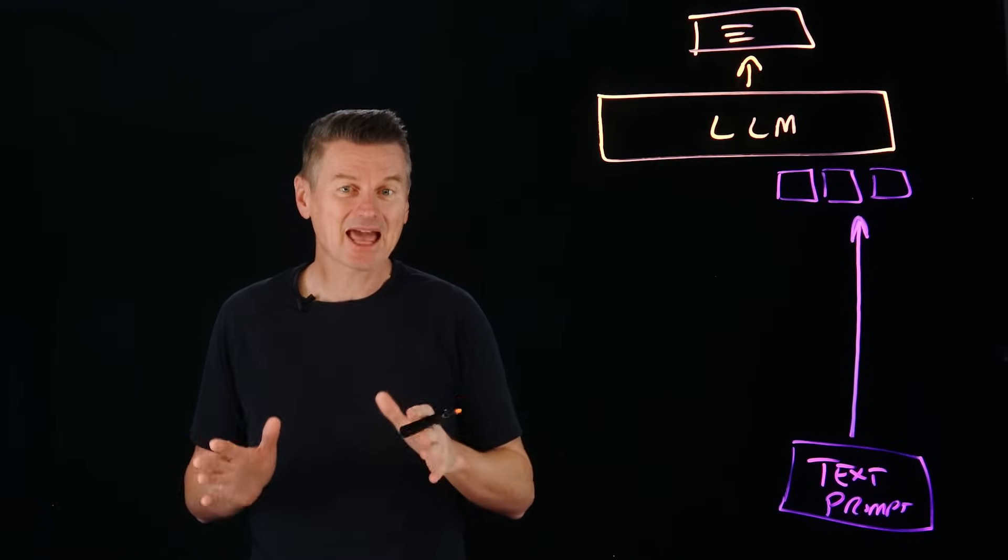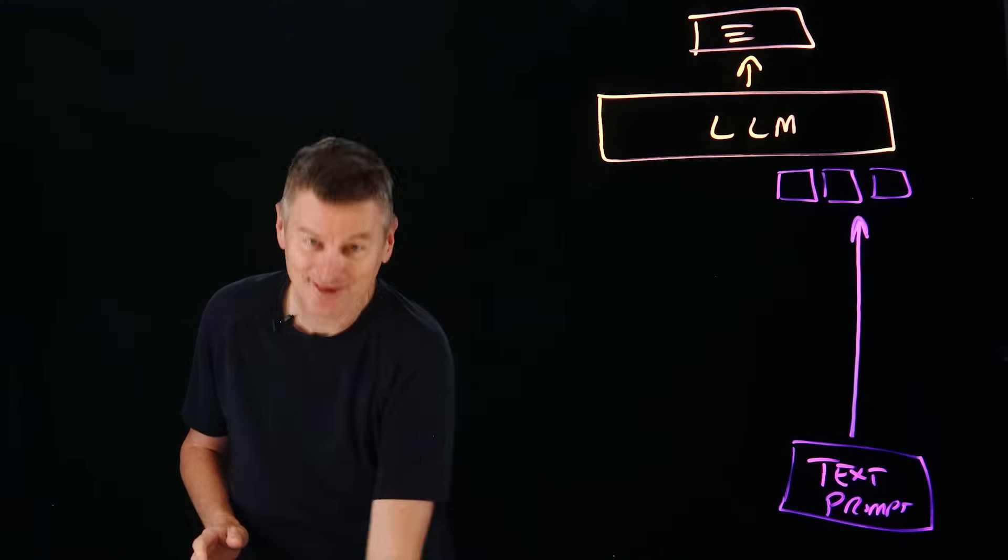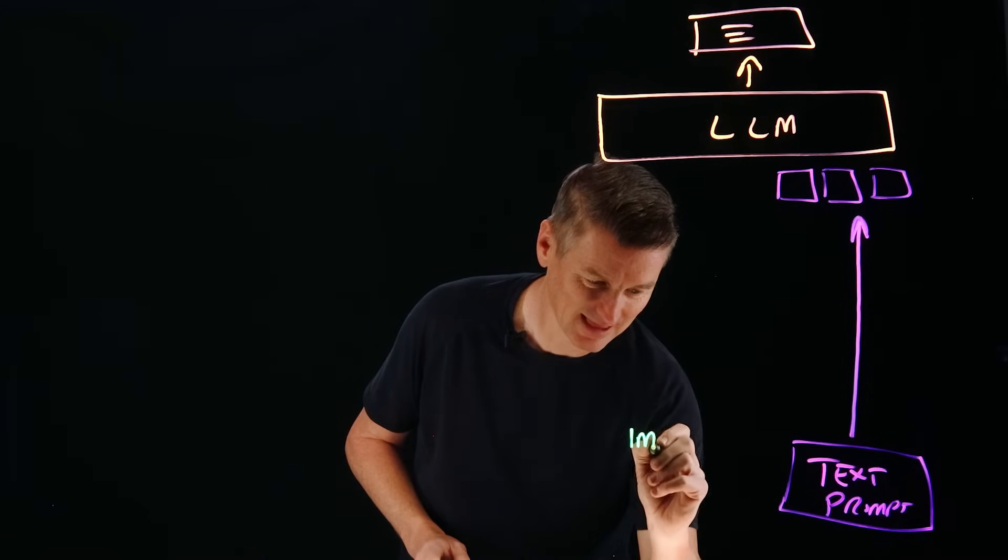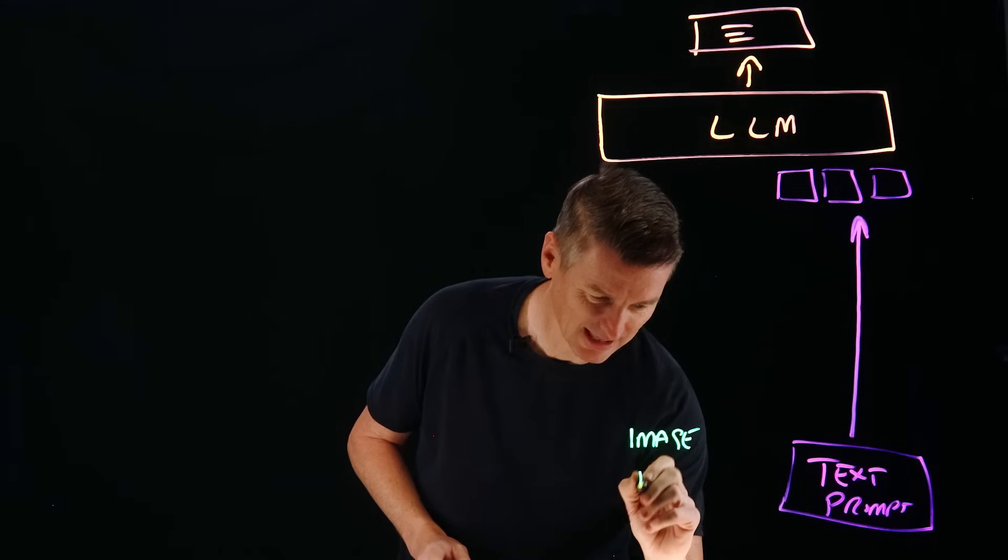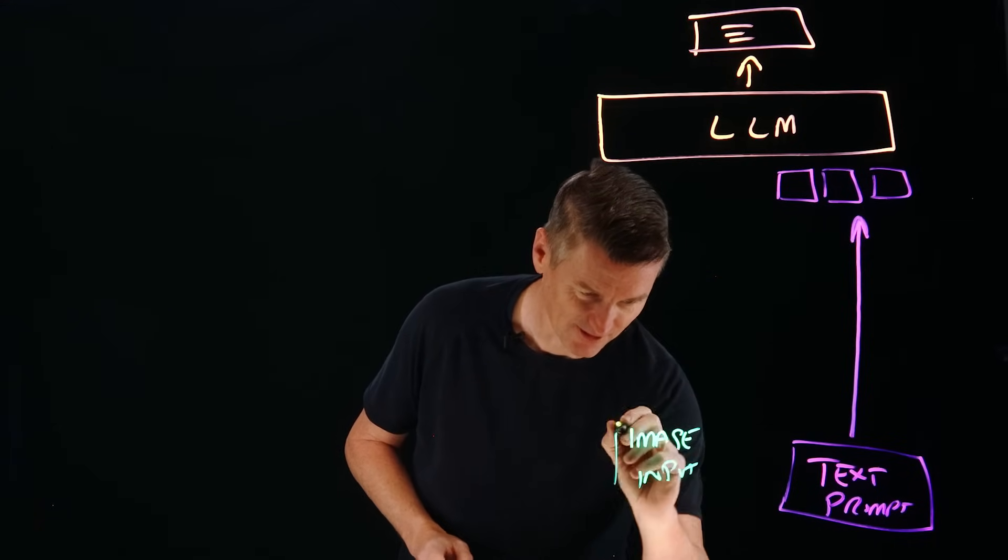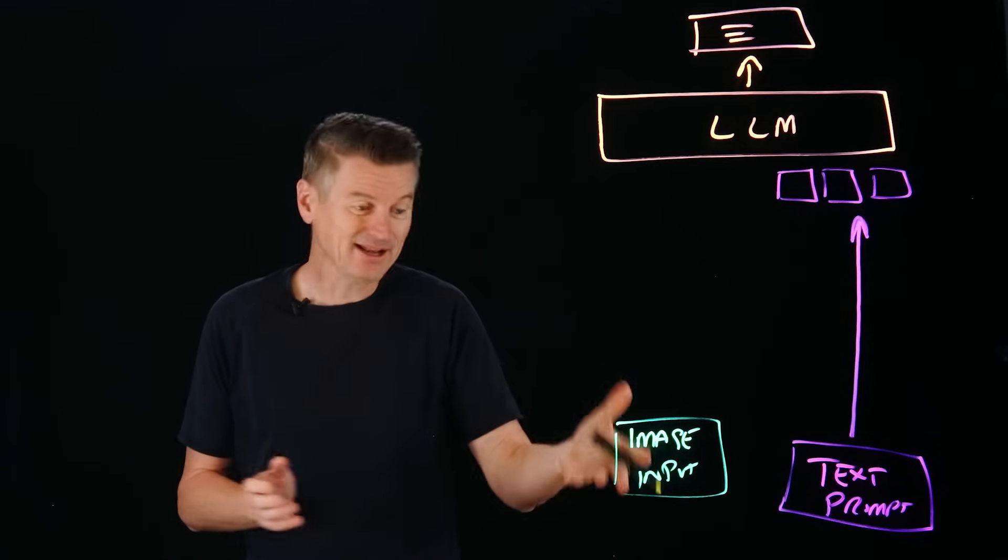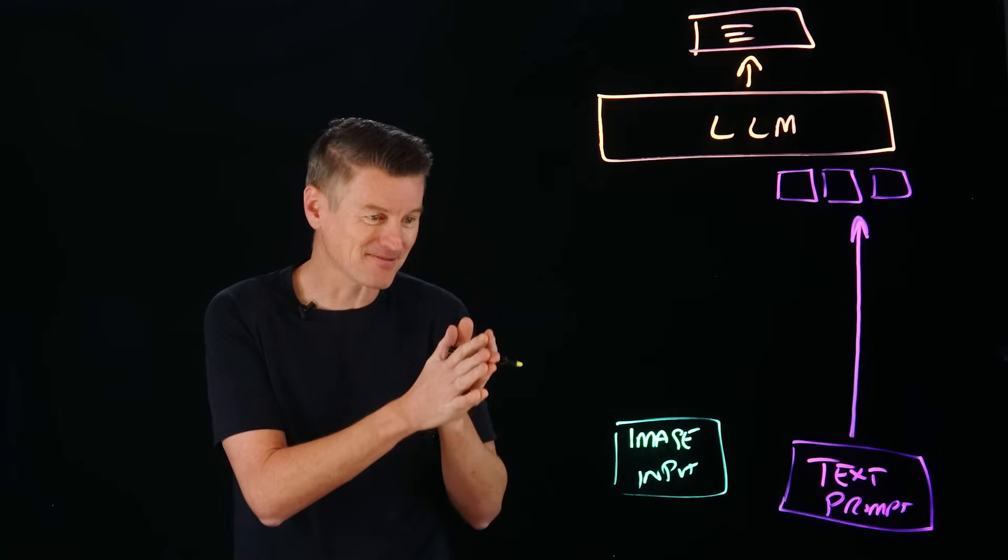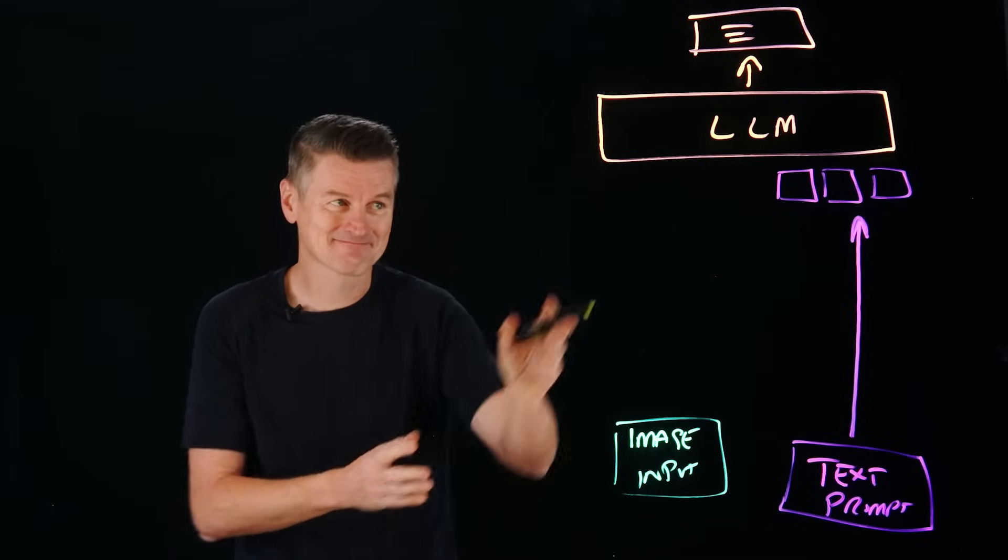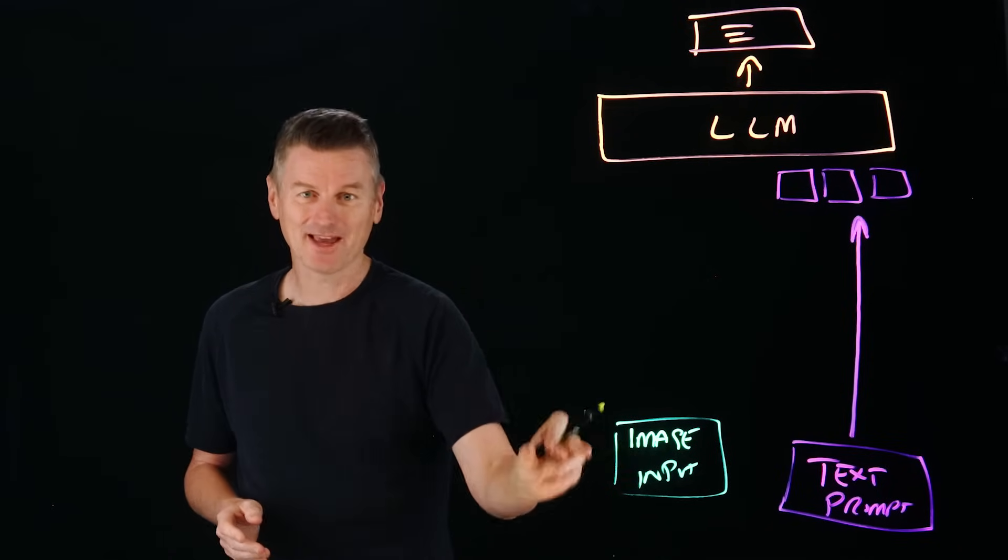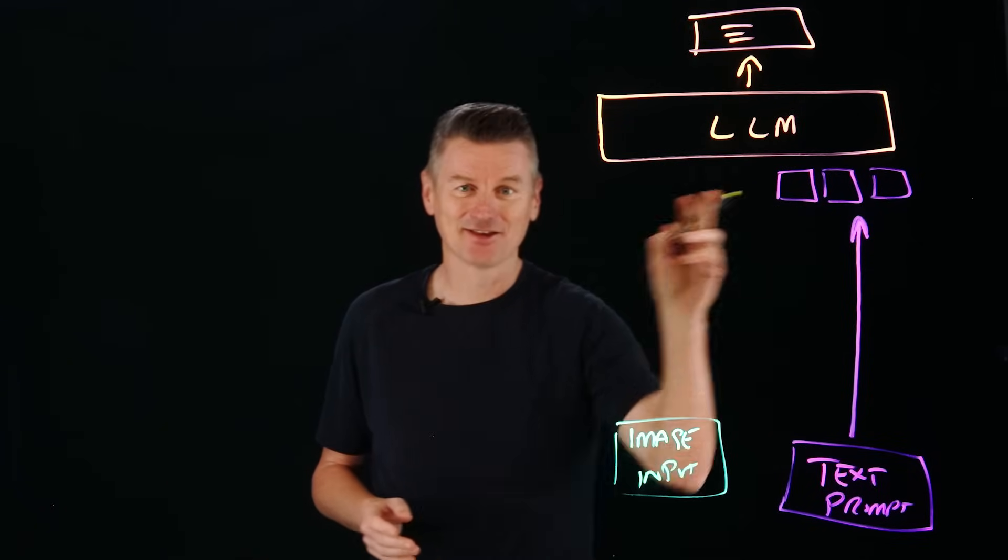But vision language models introduce something new. And that new thing that they introduce is an image input. So now we have to process this, a photo, a graph, or anything else we want the model to understand. But there is a challenge here.